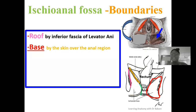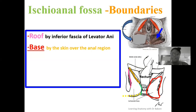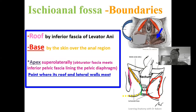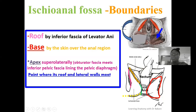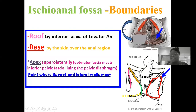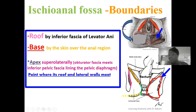Using this lower image, the ischioanal fossa is visible, and at its inferior part highlighted in dotted yellow is the base, formed by the skin lining over the anal region. The apex, because the ischioanal fossa is a wedge-shaped space, is directed superolaterally — superiorly placed and directed towards the lateral pole.